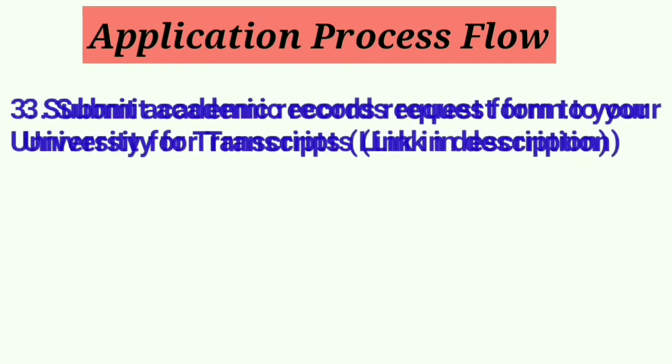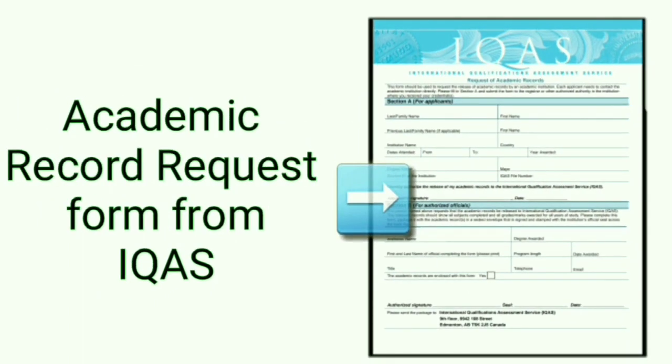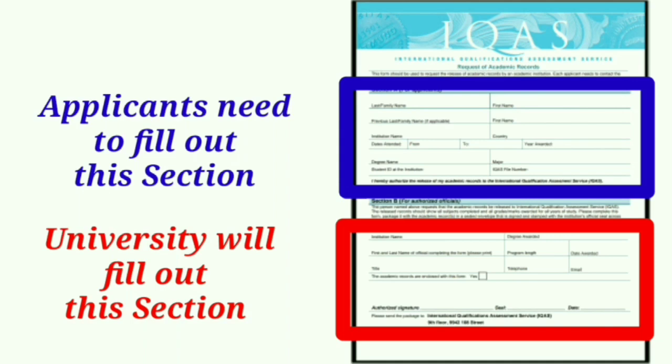Once you figure out which documents you need, you can apply for transcripts. You will need to submit an academic record request form to your university — you can get that form by clicking the link in the description. The upper portion needs to be filled out by the applicant and the bottom part will be handled by the university. Make sure you fill out the record request form properly with your application reference number and all other basic details.